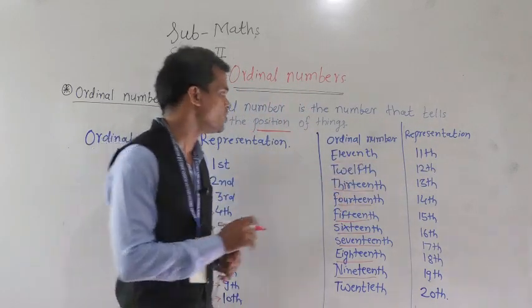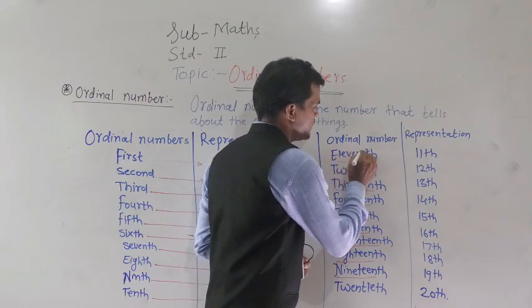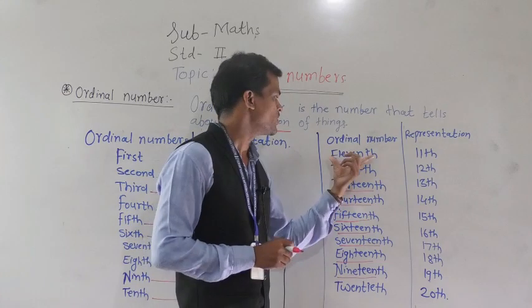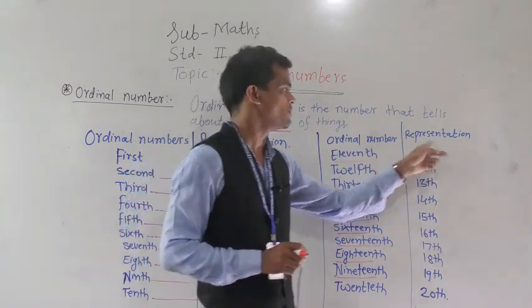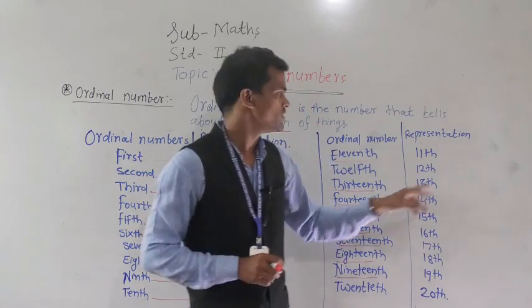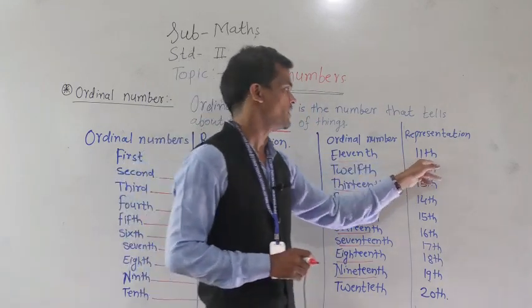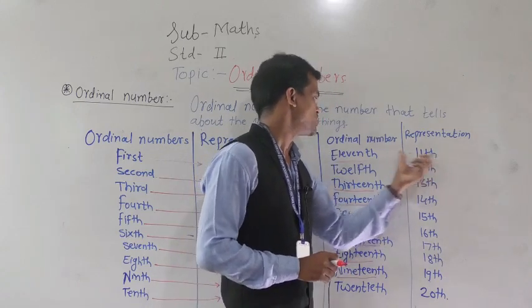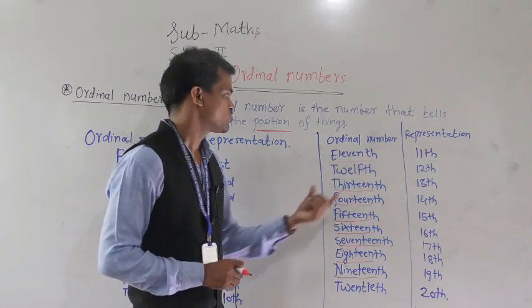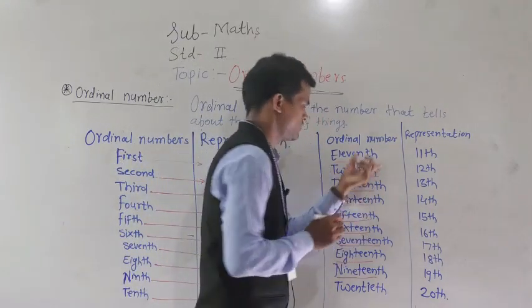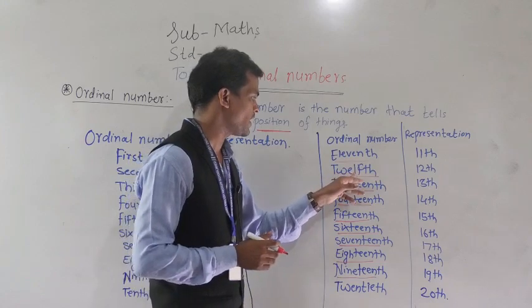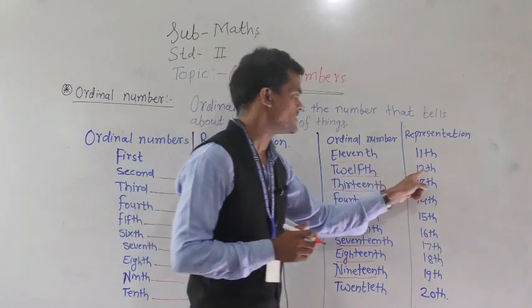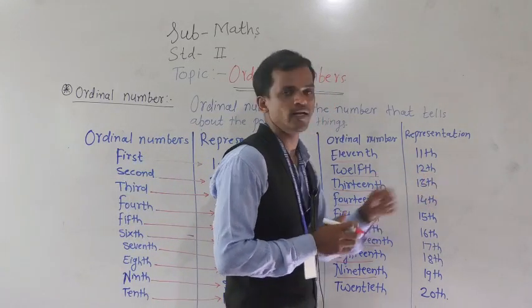So see — eleven, spelled E-L-E-V-E-N, and you add T-H as a suffix to form eleventh. The representation is: write 11, and after that write th — so 11th. Then twelve — this spelling is quite different: T-W-E-L-F-T-H for twelfth. The representation is: write 12, and after that write th — so 12th.